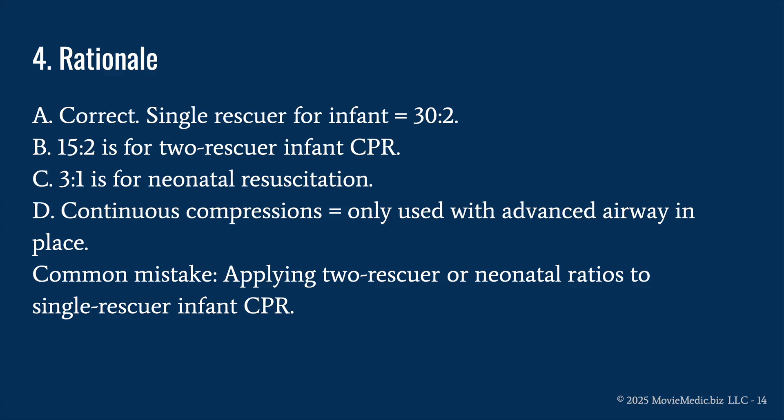A is correct because a single rescuer for an infant requires a ratio of 30 to 2. B, 15 to 2, is for two-rescuer infant and pediatric CPR — if you only have one rescuer, it's 30 to 2. C, 3 to 1, is for neonatal resuscitation. D is wrong because continuous compressions are only used with an advanced airway in place. The common mistake is applying two-rescuer or neonatal ratios to single-rescuer infant CPR. Know your ratios.